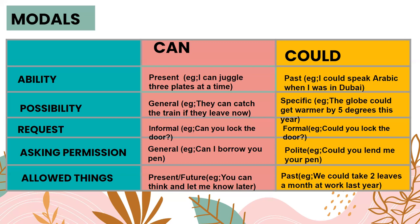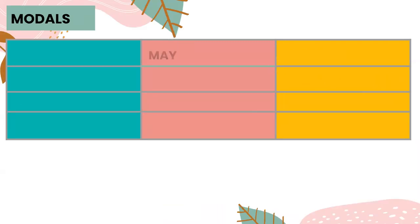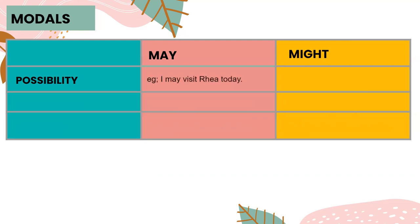The next set of modals is may and might. May and might can be used interchangeably in many cases. For example: I may visit Ria today — that shows I'm not sure but there's a 50% chance I would visit her. Might is more widely used by British and European speakers, while Americans prefer using may more than might.